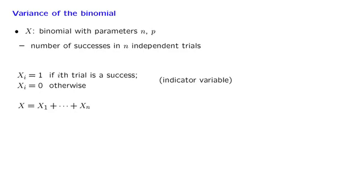And as we did before, we note that X, the total number of successes, is the sum of those indicator variables. Each success makes one of those variables equal to 1. So by adding those indicator variables, we are just counting the number of successes.